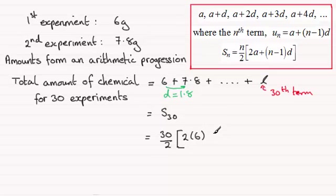Plus n minus 1. So n was 30, so if we subtract 1 from that, we're going to have 29 times the common difference, which is 1.8.